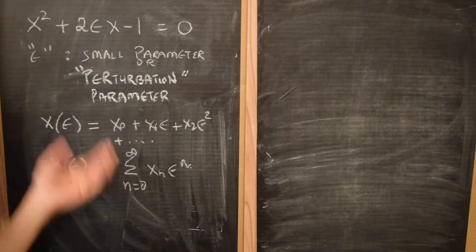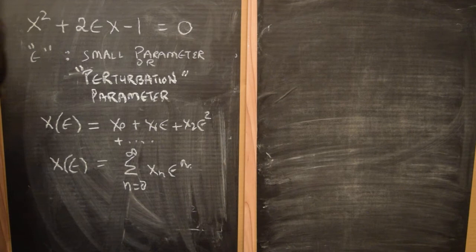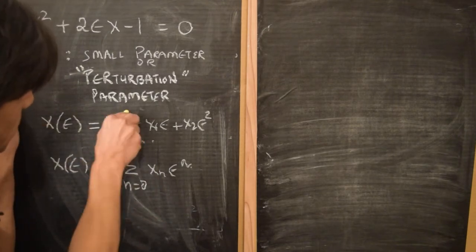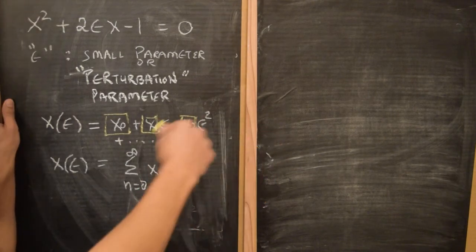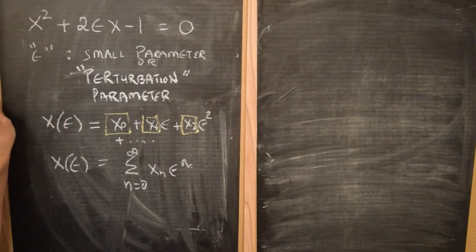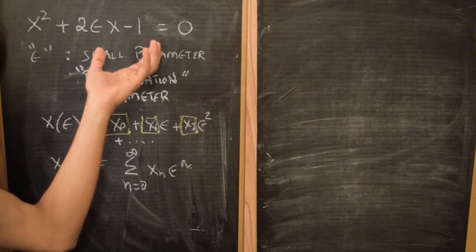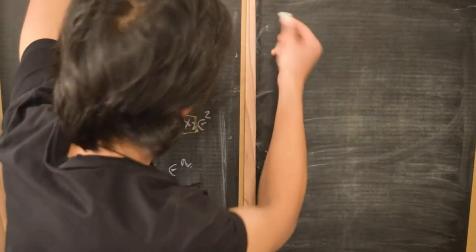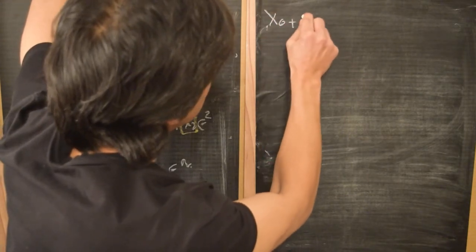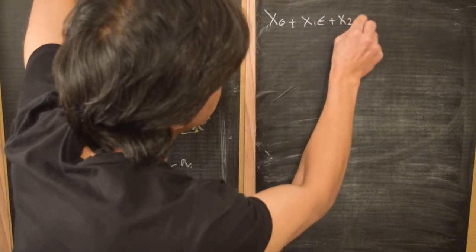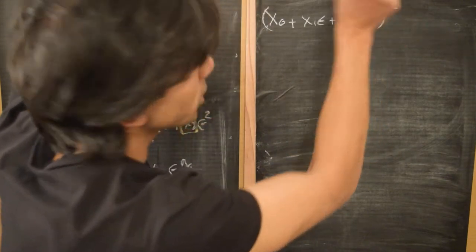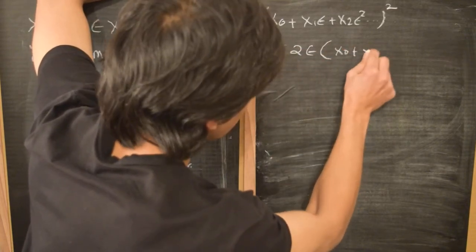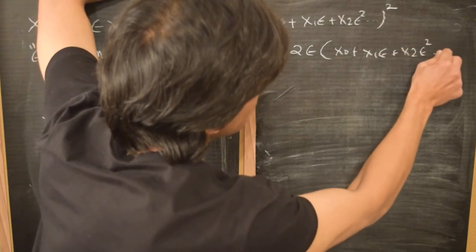So we look for a solution of this equation of this form, pretending that we don't know how to solve this particular equation. Now what does it mean to look for the solution of this form? It means that we have to solve for these coefficients x₀, x₁, x₂, and so on. So what we'll do is we'll take this series and plug it into the equation and try to simplify and see how the process works. So we have x squared — let's put this factor in: x₀ plus x₁ epsilon plus x₂ epsilon squared dot dot dot, all squared, plus 2 epsilon times x₀ plus x₁ epsilon plus x₂ epsilon squared dot dot dot minus 1 equals 0.